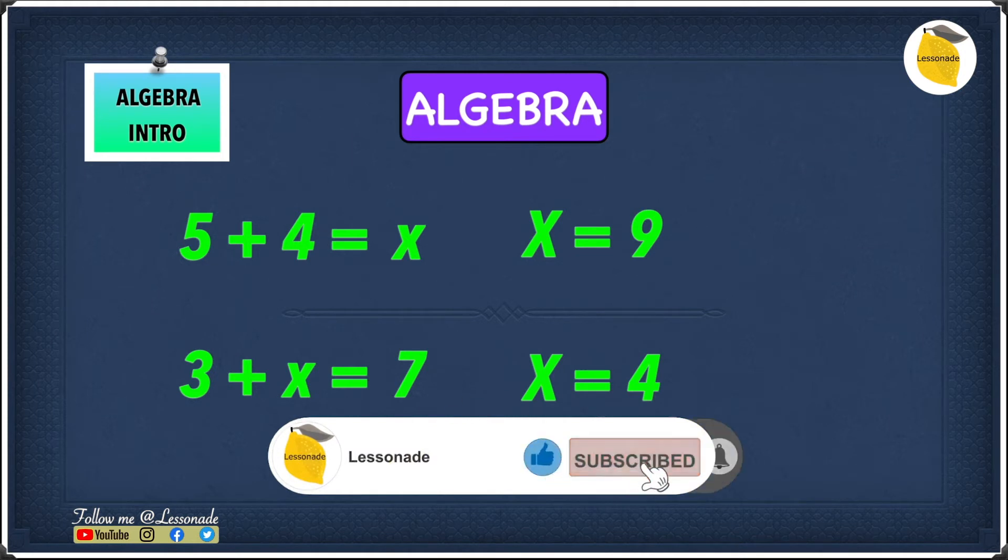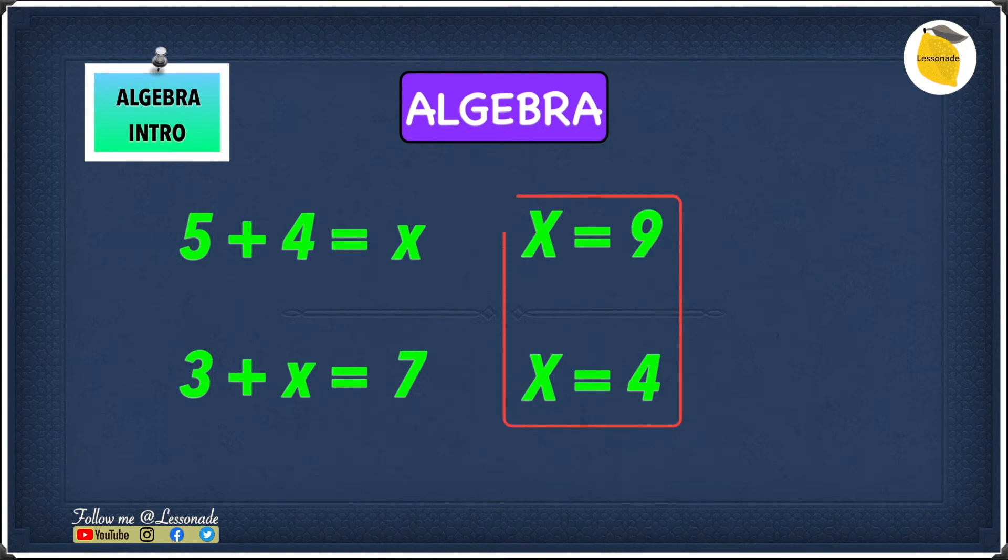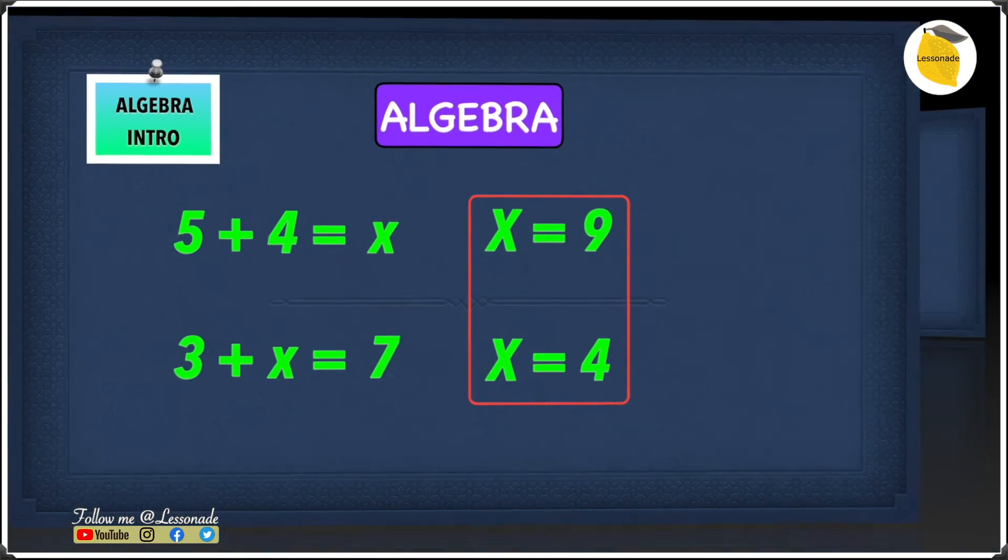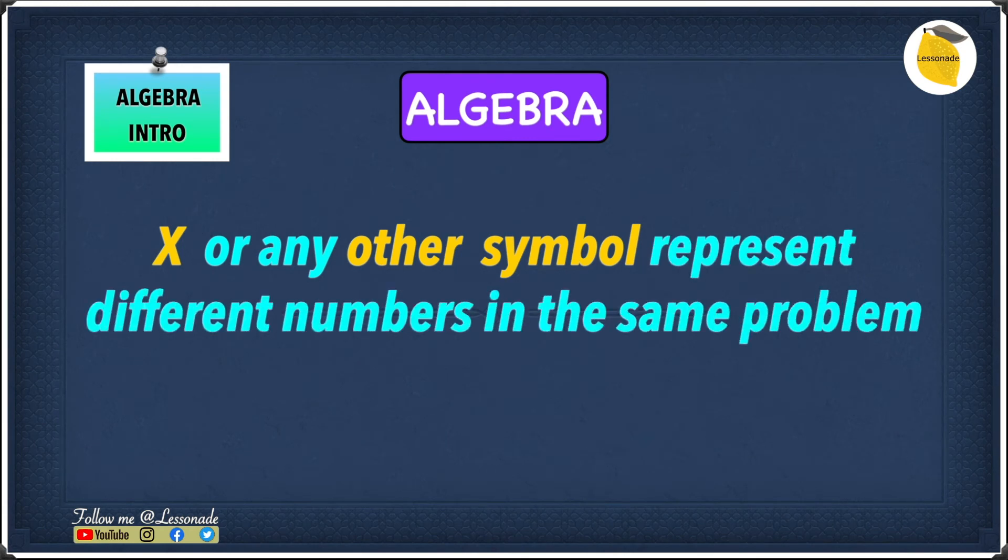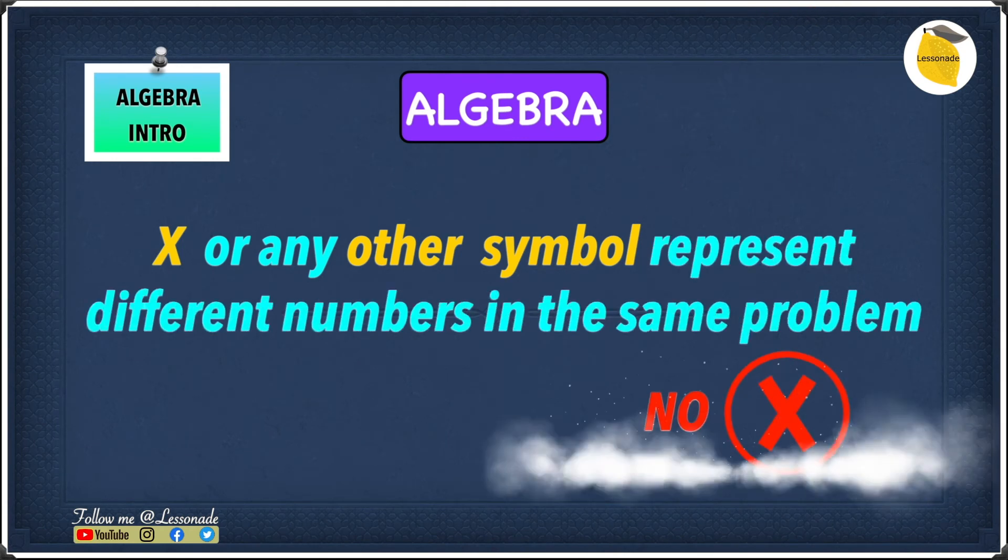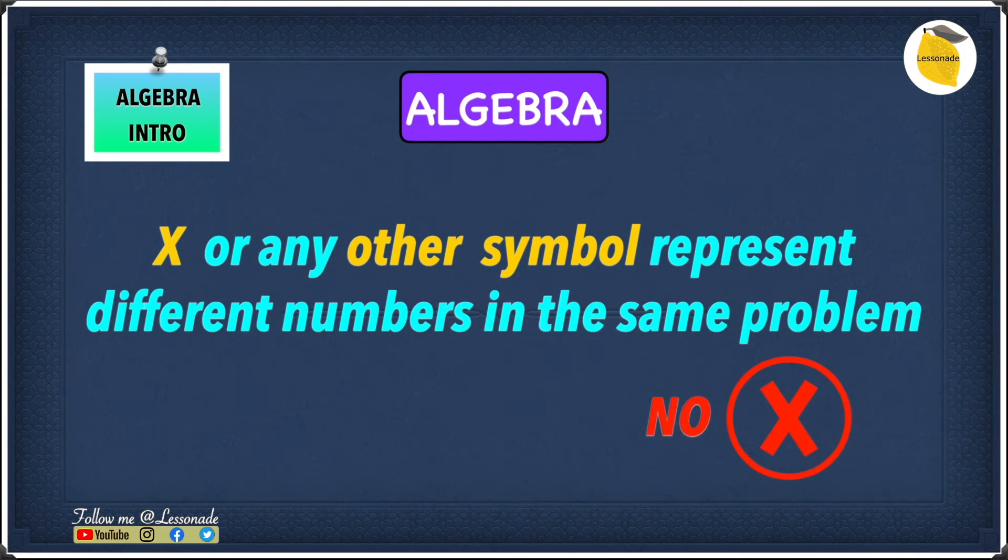So as we said before, x or any of the symbols, if they have different values in different problems, then it's okay. And as you could see in this example, we have two x's and they have different values in different problems. But if x or any of the symbols represents different numbers in the same problem, then it's not okay. So if x or any of the symbols represent different numbers in the same problem, then that's not right. For example, if x represents both 9 and 4 in the same problem, that is not right.